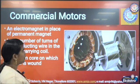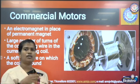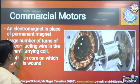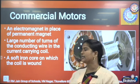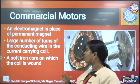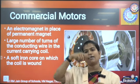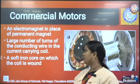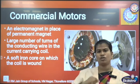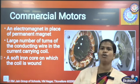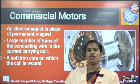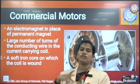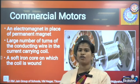In commercial motors, some changes are made to enhance the power of the motor. First, they use an electromagnet in place of a permanent magnet. Also, they use a large number of turns of conducting wire in the armature coil so it conducts more current, and as a result more force is exerted. Additionally, the armature coil is wound around a soft iron core instead of other materials, which provides a better magnetic field and maximum force, thus enhancing the power of the electric motor.